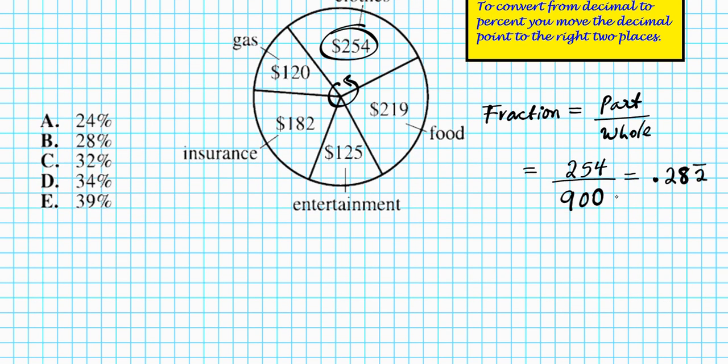Now, how can we convert that into percent? 0.28, two repeating can be converted into percent by simply moving the decimal points to the right two places. One, two, bam.